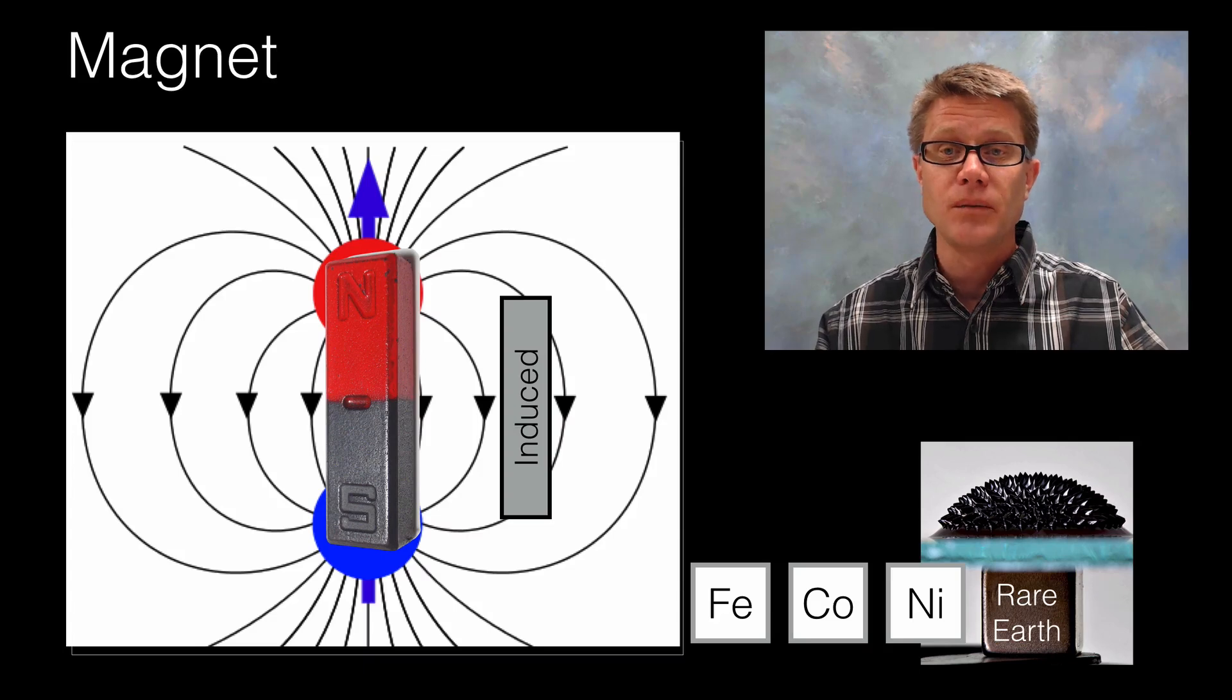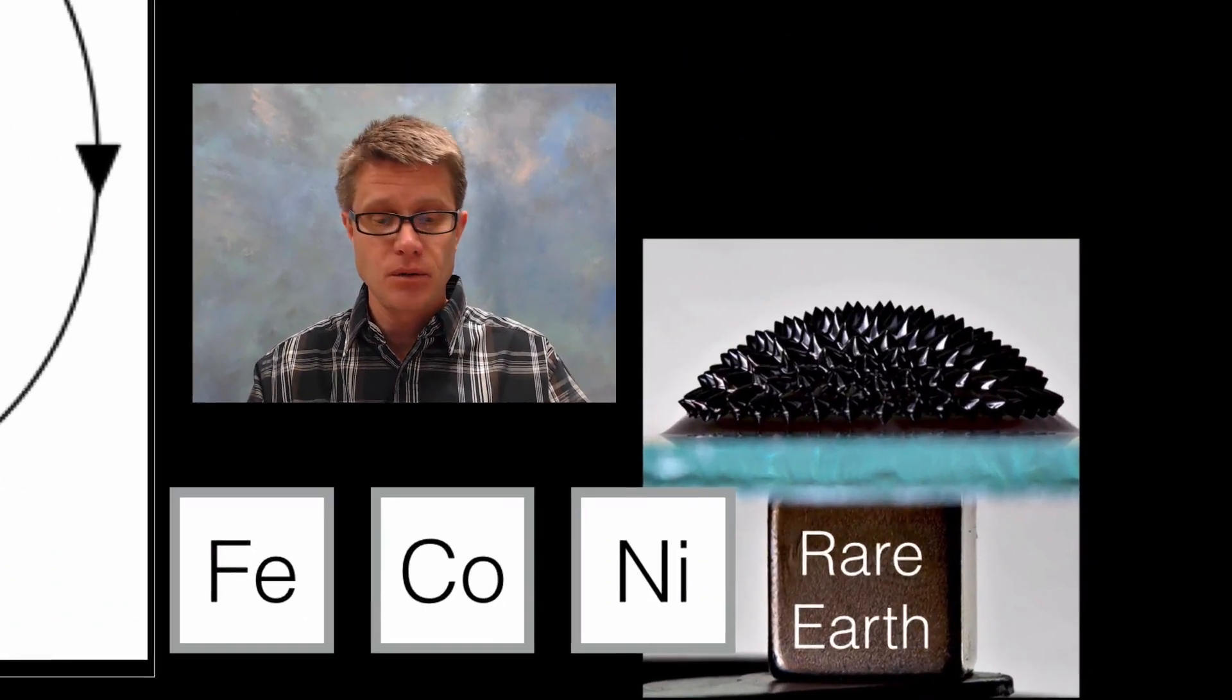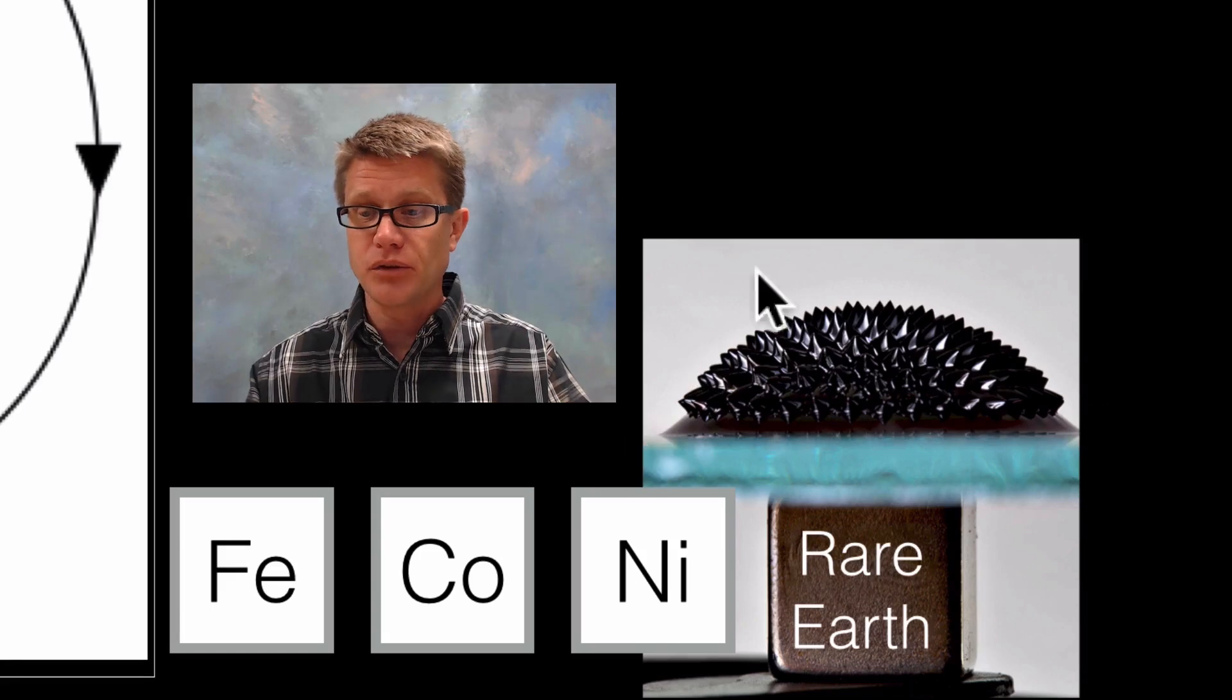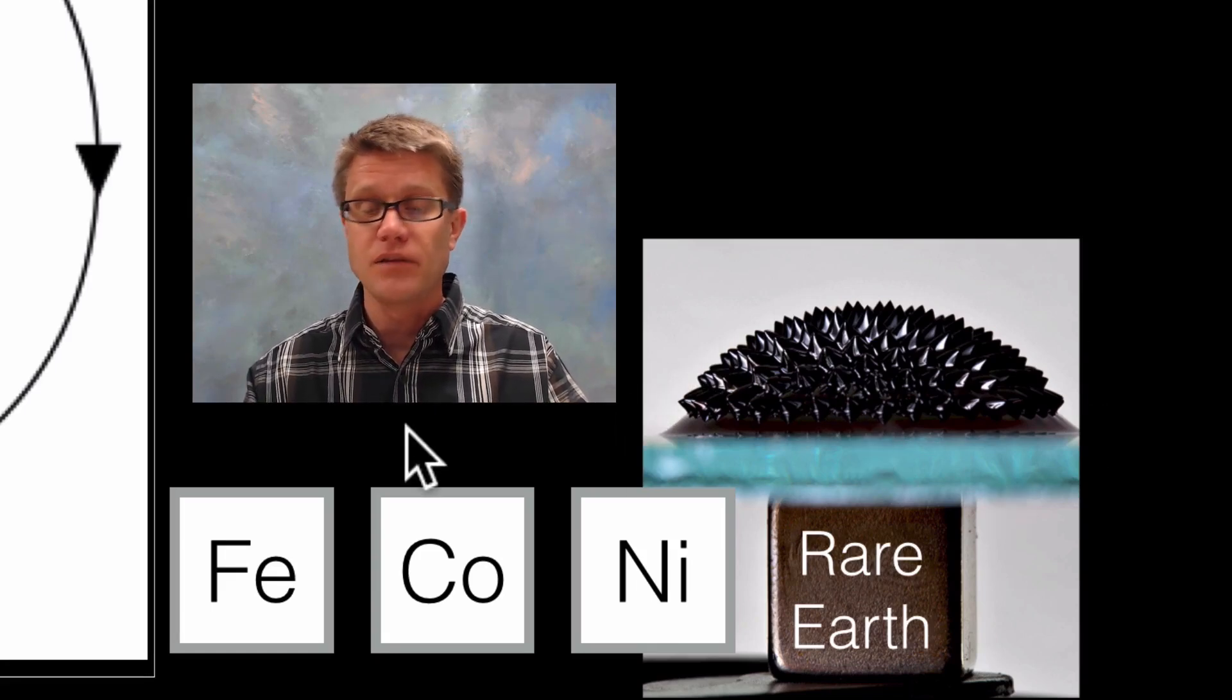So it could be iron, copper, nickel. And then we have these rare earth metals like a neodymium magnet that we have right here. And it has this ferrofluid over the surface of it. You can almost see those magnetic fields coming out of that magnet.